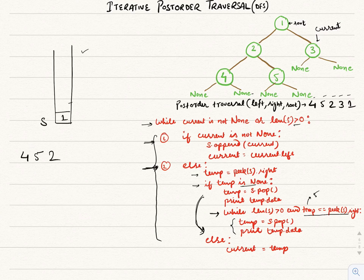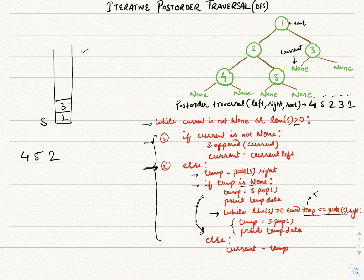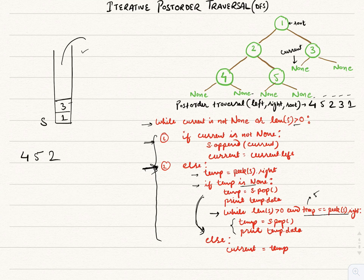The loop continues as current is not none. We append 3 to the stack and move current to its left. Current is now pointing to none but the stack length is still greater than zero, so the loop continues. It falls under the second condition — peek s which is 3 has a right of none, so it's a leaf node. We pop 3 and print 3.